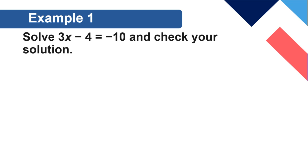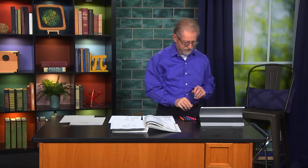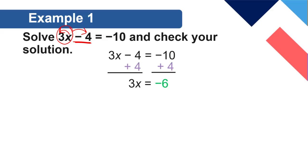Example one, solve 3x minus 4 equals negative 10. Now, what's happening to the x? Well, it's multiplied by 3, and then you subtract 4. So, what we have to do, the last step that was done to the x is subtracting. So, we have to add 4. We have to do the inverse operations in the reverse order. Okay? So, we add 4 to both sides. That gives us 3x equals negative 6. Now, we do the division of both sides by 3. x equals negative 2.